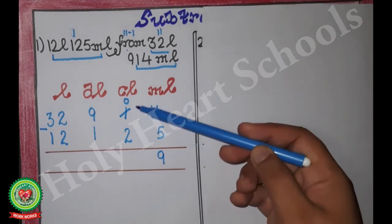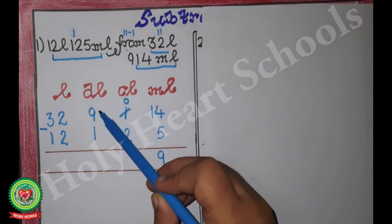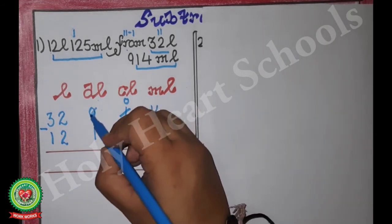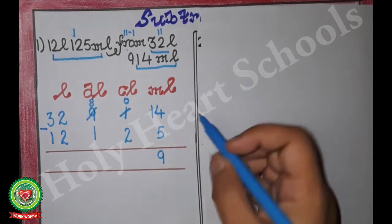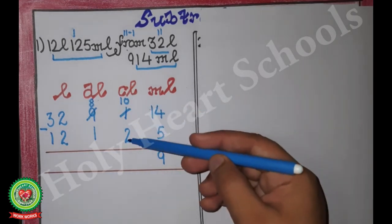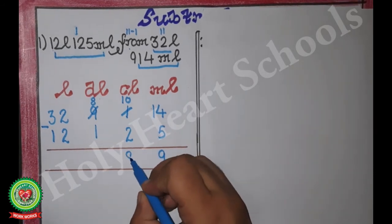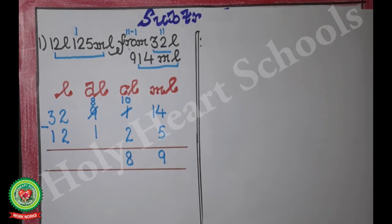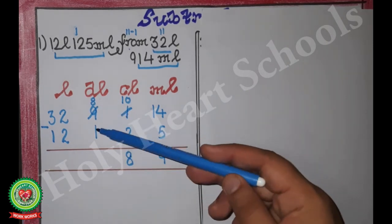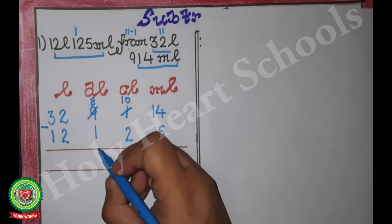Can I subtract 2 from 0? No. So this 0 will borrow from 9 — 9 becomes 8 and 0 becomes 10. Now 10 minus 2 is 8, so we write 8. Then 8 minus 1 is 7, so we write 7.